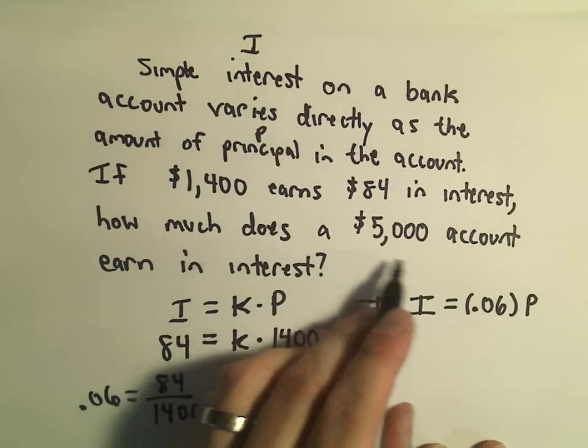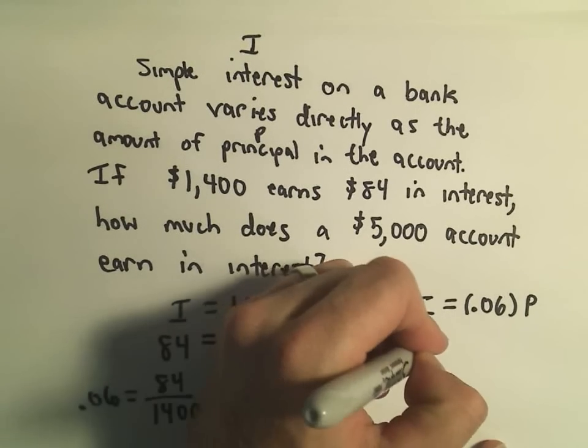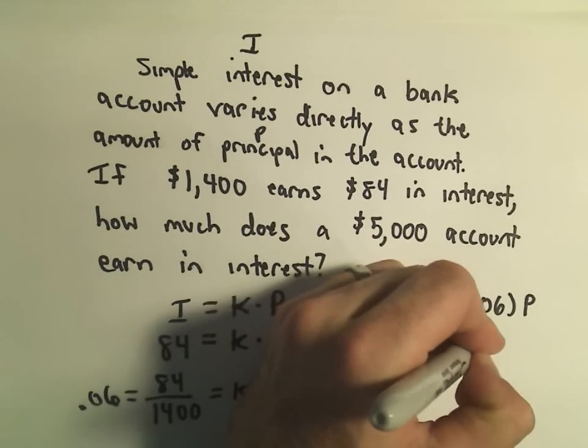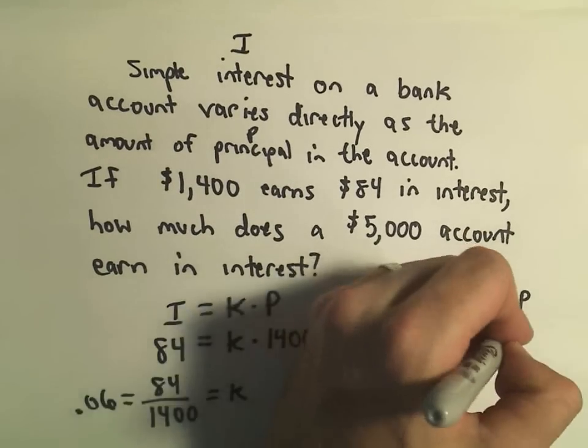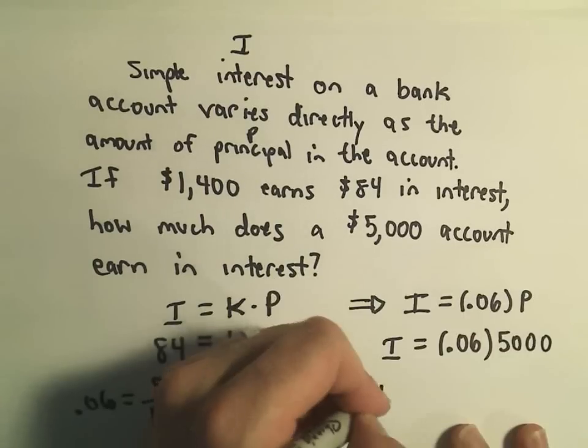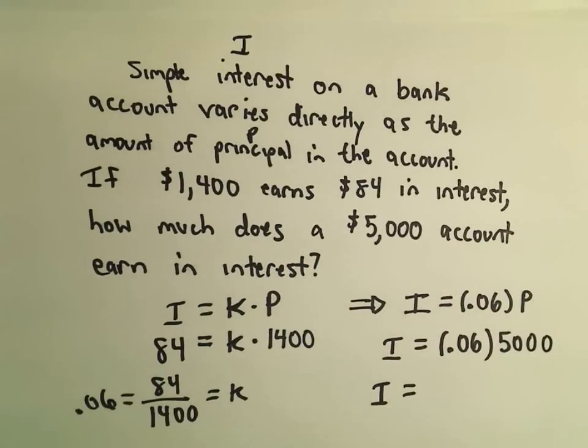So to answer the question, to figure out the interest, we'll just simply take .06 and multiply that by the new principal, which is 5,000. And .06 times 5,000 should simply just be 300, which it is.